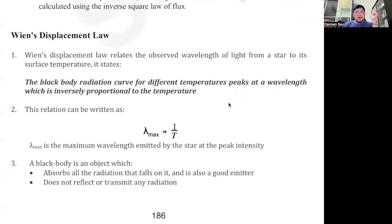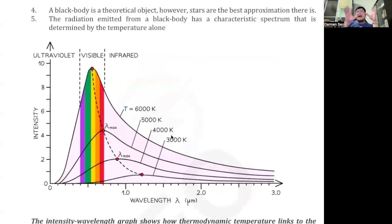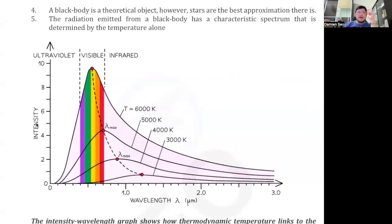According to Wien's Displacement Law, the wavelength with the highest intensity is inversely proportional to the surface temperature of the star. All stars emit a range of EM radiation, but the wavelengths don't all have the same intensity — some have lower intensity, some higher. So astronomers measure the wavelength that is producing the highest intensity. Looking at a graph of intensity versus wavelength: for a star with a surface temperature of 6,000 K, the wavelength with the highest intensity falls within the yellow color region.